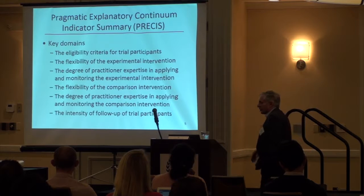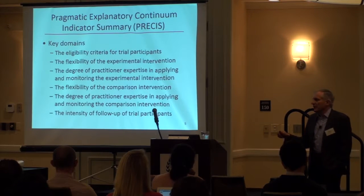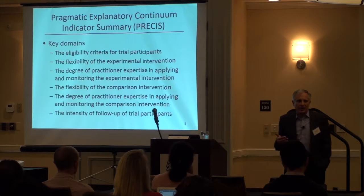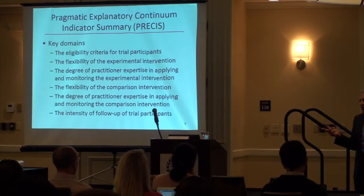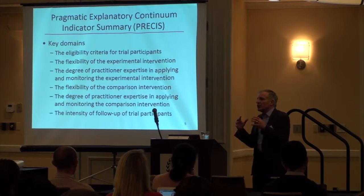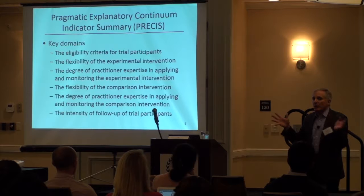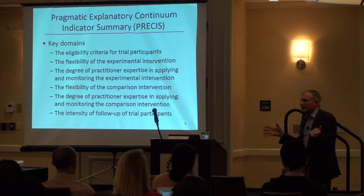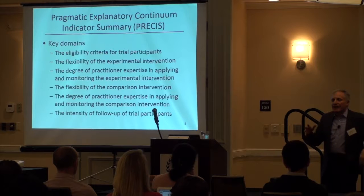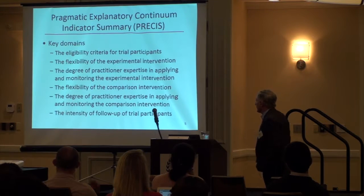The flexibility of the experimental intervention: in an explanatory trial, how you treat patients is defined as precisely as possible to eliminate inter-practitioner and inter-patient variability, so that differences in outcomes can't be attributed to differences in how treatment was administered. In a pragmatic trial, you embrace the reality that practitioners do things their own way — sometimes the recommended dose, sometimes a little more, sometimes for a week, sometimes ten days. That variability is part of how the treatment actually performs in usual clinical care, so you allow much greater flexibility.